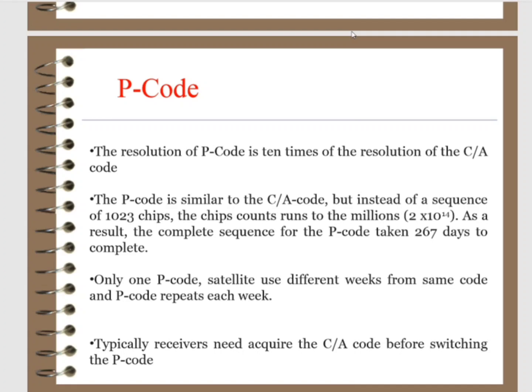The code contains 2 to the power of 10 to the 14th bits in total. Each GPS satellite is assigned a portion of the P code and repeats this portion every seven days. This assignment of one particular week out of the 37-week-long P code to each satellite helps the GPS receiver distinguish one satellite transmission from another.